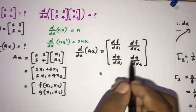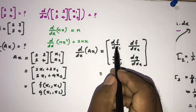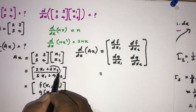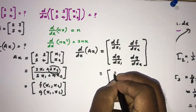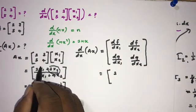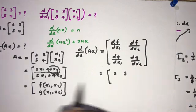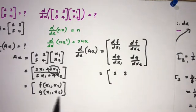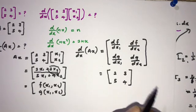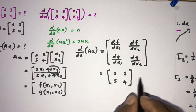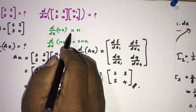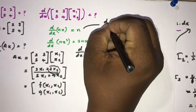Computing the partial derivatives: df/dx1 = 2, df/dx2 = 3, dg/dx1 = 5, dg/dx2 = 4, since the other terms are constants. So the answer is the matrix [[2, 3], [5, 4]], which is just A. This confirms our general rule: d/dx of Ax equals A, analogous to d/dx of nx equals n.